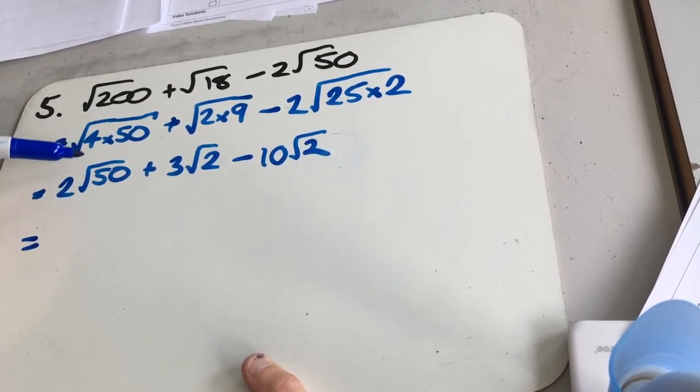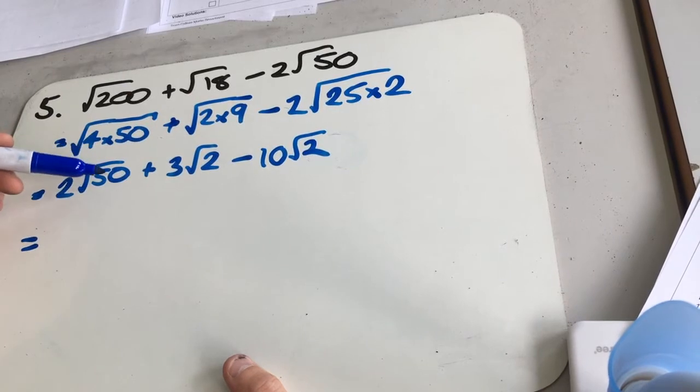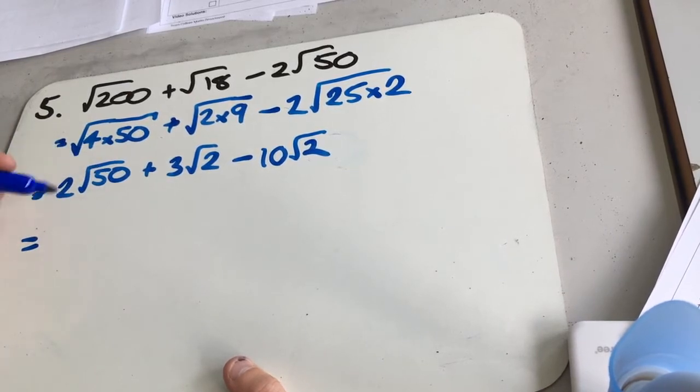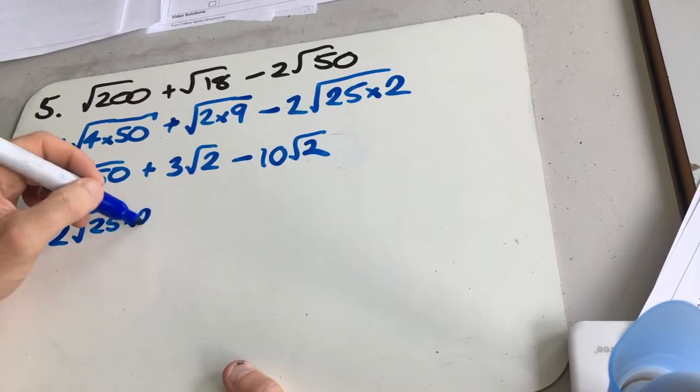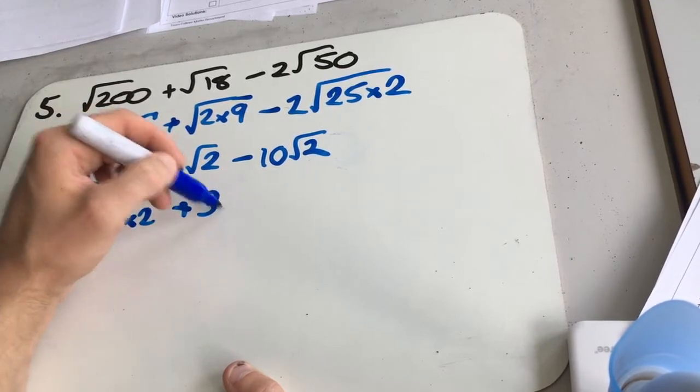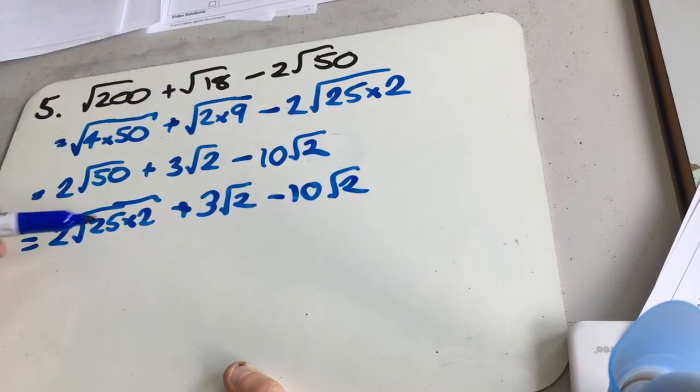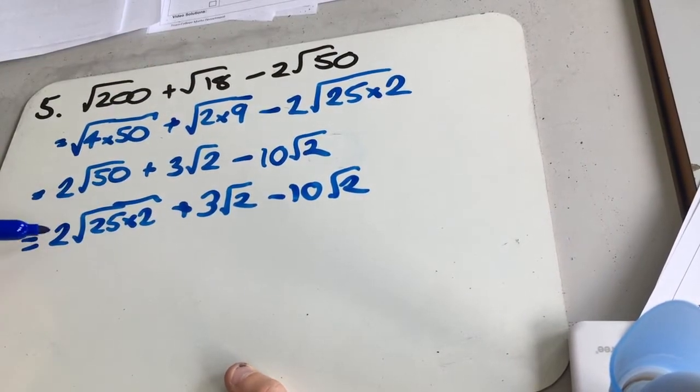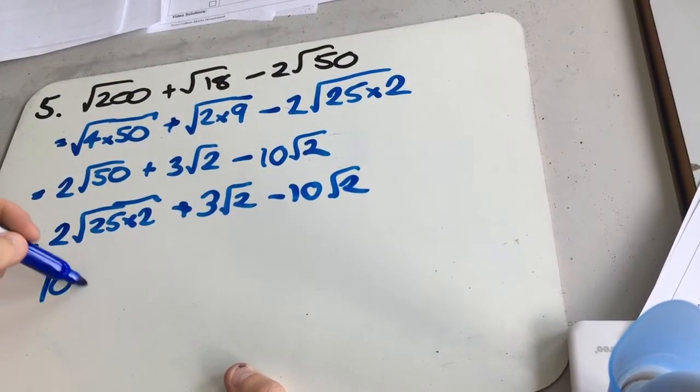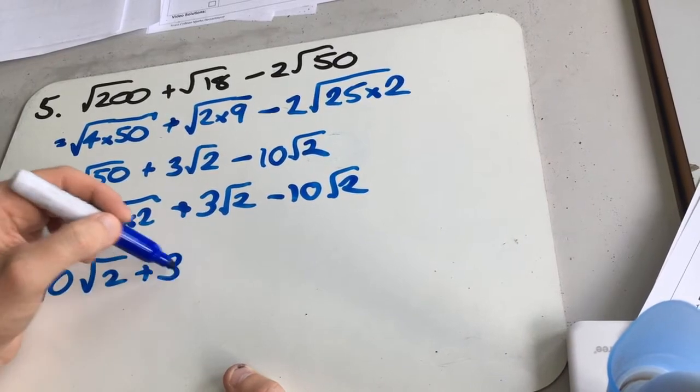So 2 lots of 25 times 2. And then the rest of it. Now this, we can say the root of 25 is 5, so we get 2 times 5, which is 10 root 2 plus 3 root 2.